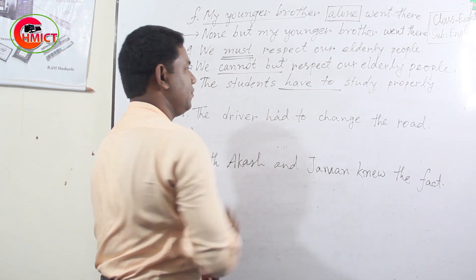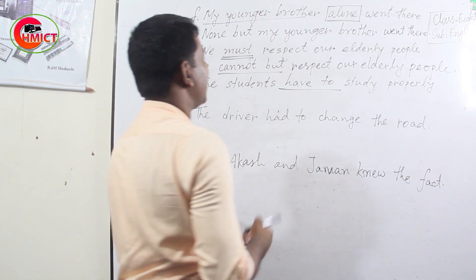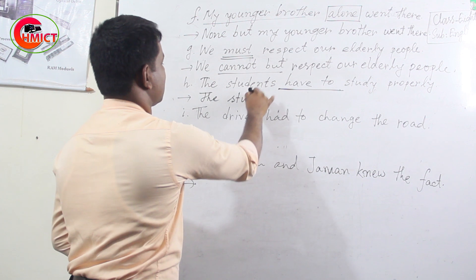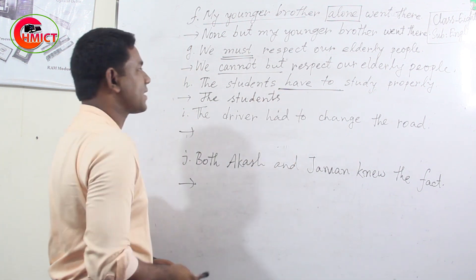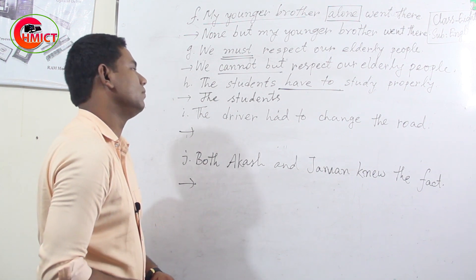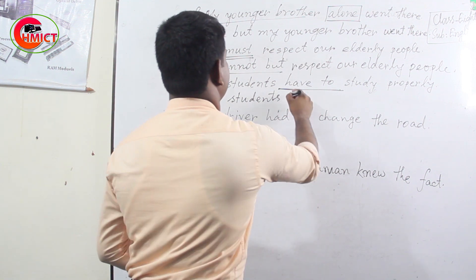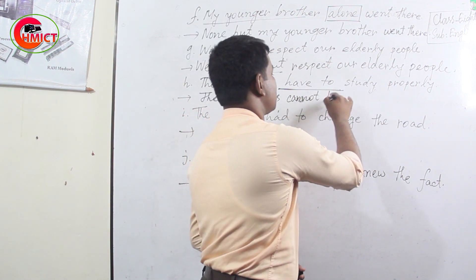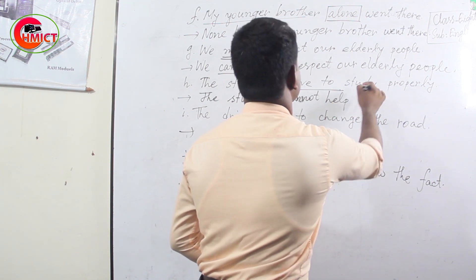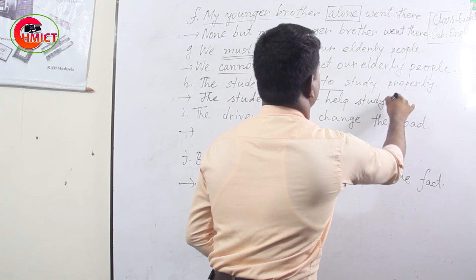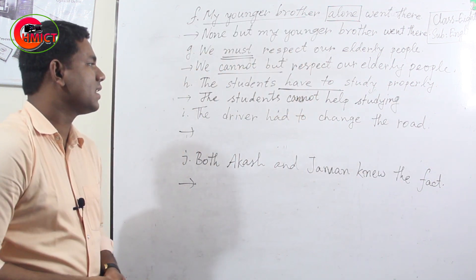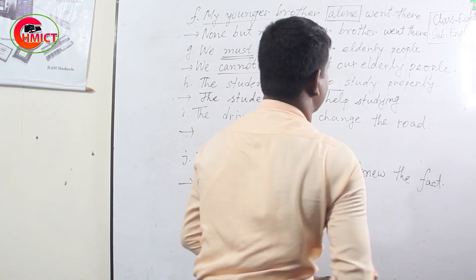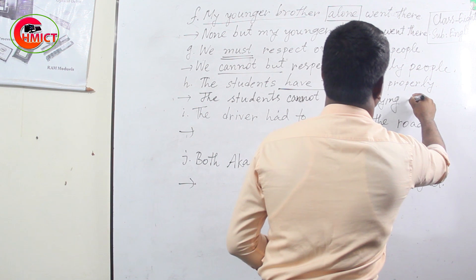The same rule applies: you can use 'cannot but' or 'cannot help' at the place of 'have to' or 'has to'. I intentionally use 'cannot help' here so you know both ways. When using 'cannot help', you must use the -ing form of the verb. So: 'The students cannot help studying properly.' Notice there is an -ing form after 'cannot help'.